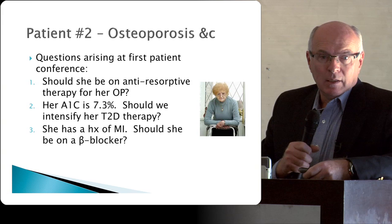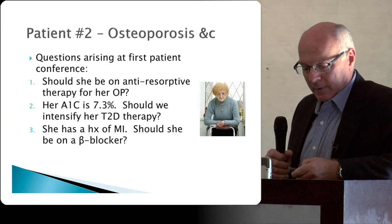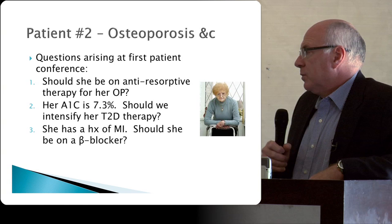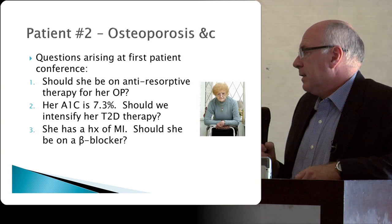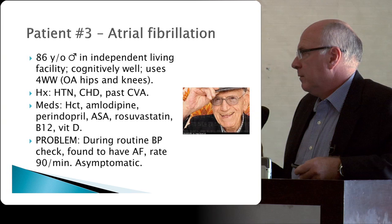She's come back from hospital without an antiresorptive agent. She has obvious severe osteoporosis given her hip fracture but hasn't been treated for it — should we start her on a bisphosphonate? Her A1C is 7.3% — should we intensify her diabetes treatment? She has a history of MI — should a beta blocker be added?